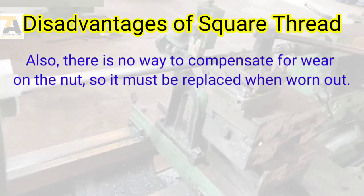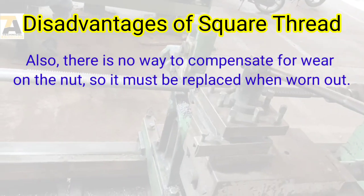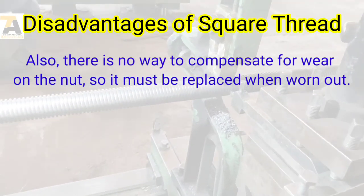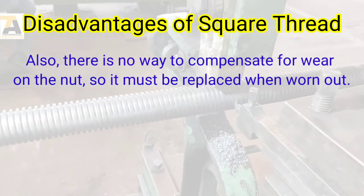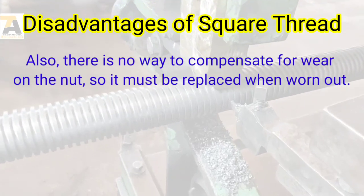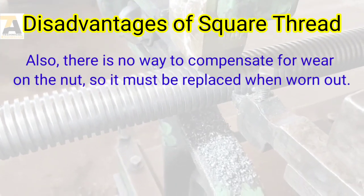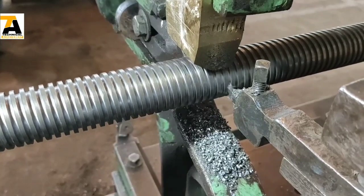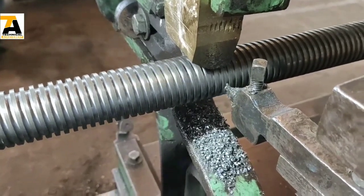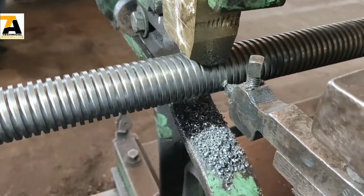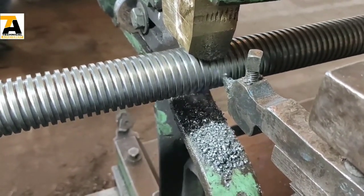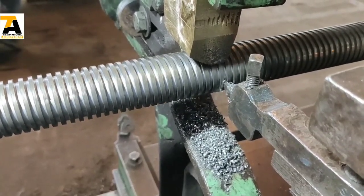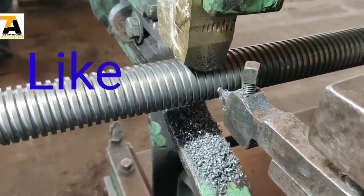Also, there is no way to compensate for wear on the nut, so it must be replaced when worn out. So friends, today we have learned what is a square thread, its uses, and the advantages and disadvantages of square threads.